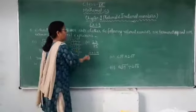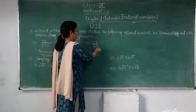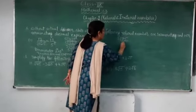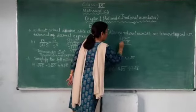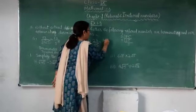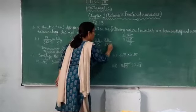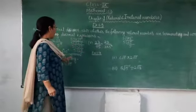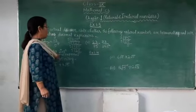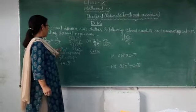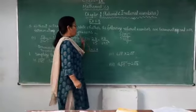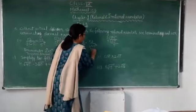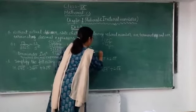Now the second part: 23/75. We find factors of 75. 75 = 3 × 25 = 3 × 5². So the denominator is 3 × 5². Since 3 appears in the denominator — and 3 is neither 2 nor 5 — this fraction is non-terminating. Wherever the denominator is not purely of the form 2ⁿ × 5ⁿ but contains other factors, the fraction is non-terminating. So 23/75 is a non-terminating decimal expression.